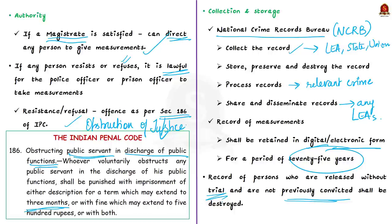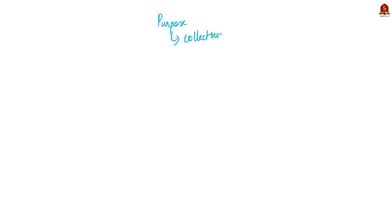This provision is important because when we saw whose measurements can be taken, we saw that a person who is arrested in connection with an offence will be asked to give measurements. But if you are discharged without charges — that is, if you are acquitted — there is no meaning in keeping your records, so they must be destroyed. Overall, the Criminal Procedure Identification Bill provides legal sanction for taking appropriate body measurements and behavioral attributes. The purpose is to make investigation of crime more efficient and expeditious, and it is expected to help increase the conviction rate.